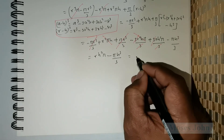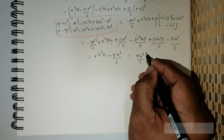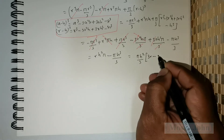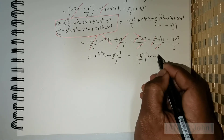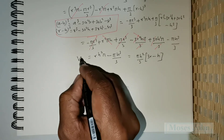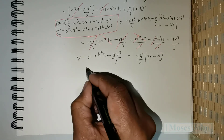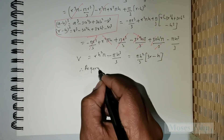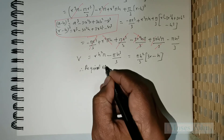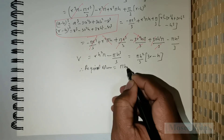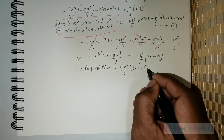Taking π, h², and 1/3 as common factors gives π·h²/3 · (3r − h). Therefore, the required volume of the spherical cap is V = πh²/3 · (3r − h) cubic units.